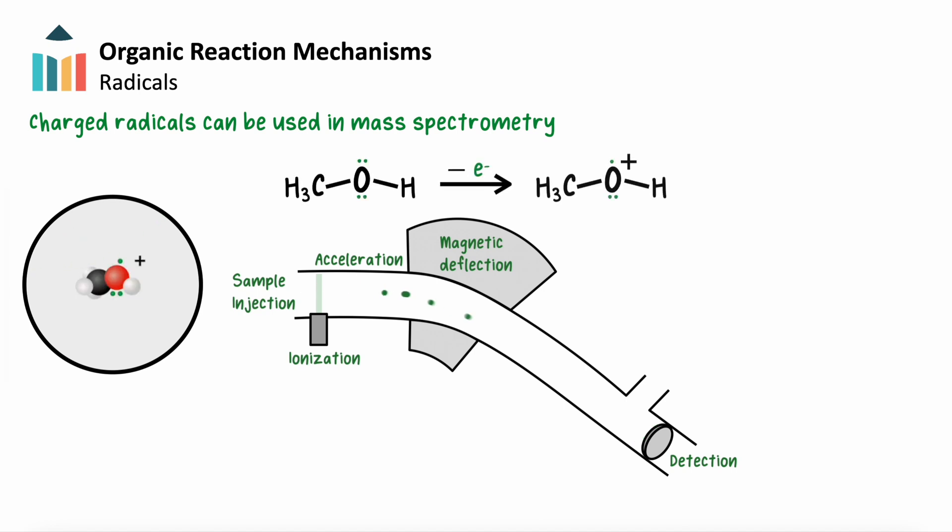For example, we can see this happen with methanol. The charge of this radical cation then allows it to be deflected by a magnetic field, helping to provide a measurement of its mass.